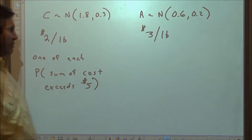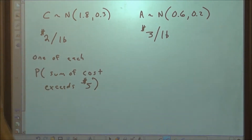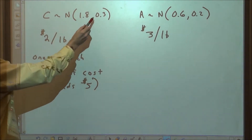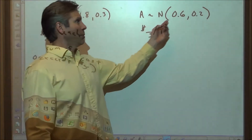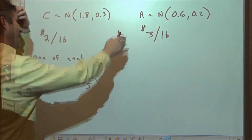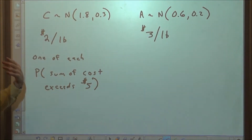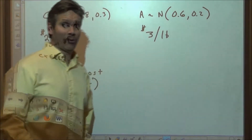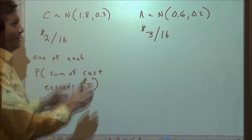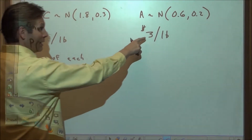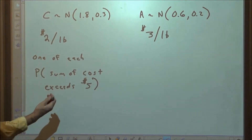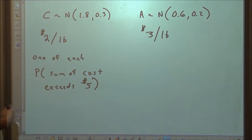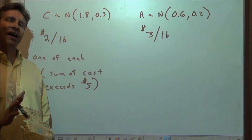Let's finish up with the mother of all joint distributions. Suppose we have cantaloupes normally distributed with a mean of 1.8 lbs and SD of 0.3 lbs, and apples normally distributed with their own mean and standard deviation. We're going to buy cantaloupes for $2 a pound and apples for $3 a pound. We select one of each and want to find the probability that the sum of the costs would exceed $5.